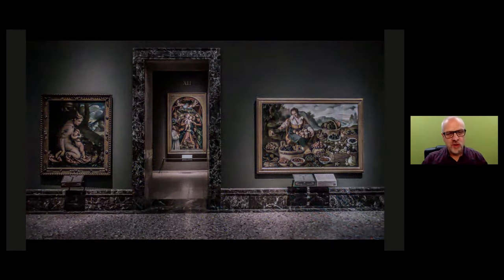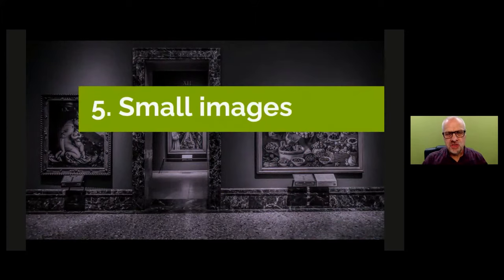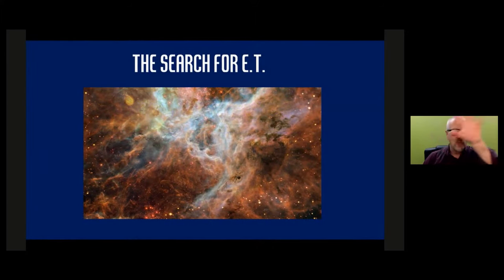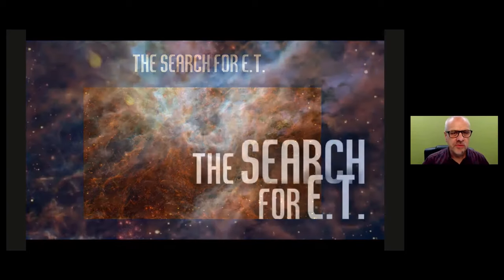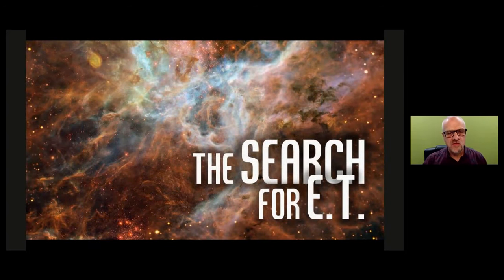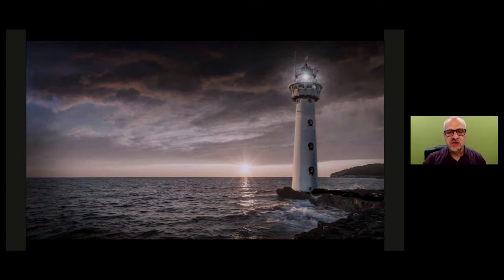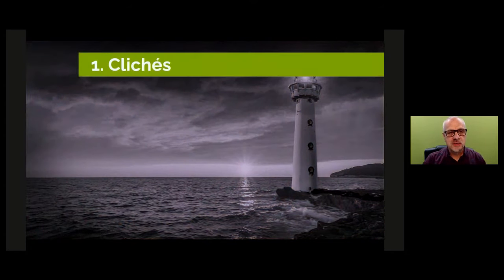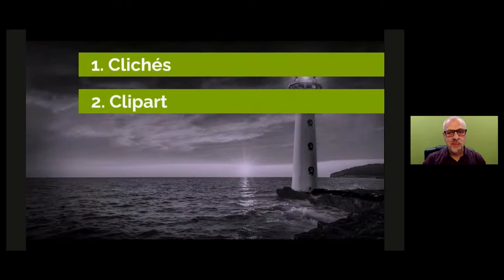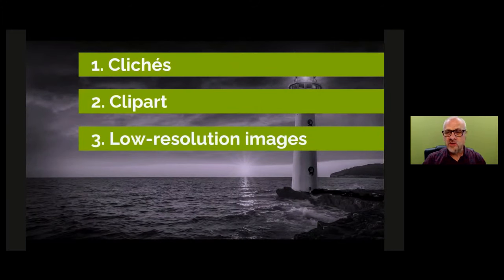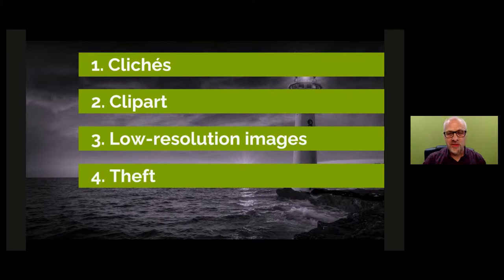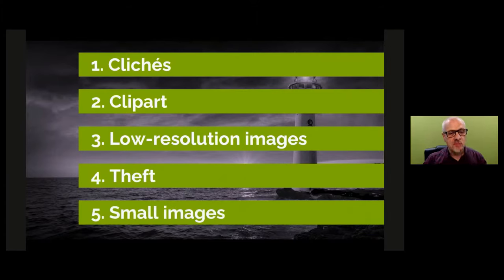The fifth thing to avoid is what I call small images — when people put an image on the slide with a load of white space or blue space around it. Do something like this instead, where the image fills the screen and the title is placed on the image in a nice creative way. So the five things to avoid when using images are: clichés, clip art, low-resolution images, copyright theft, and small images.